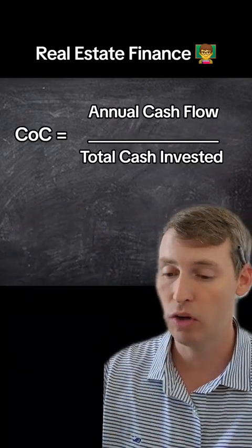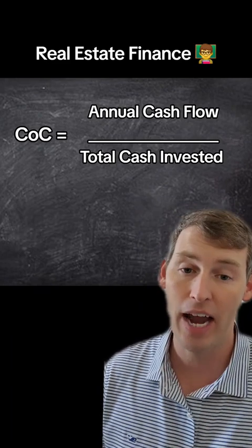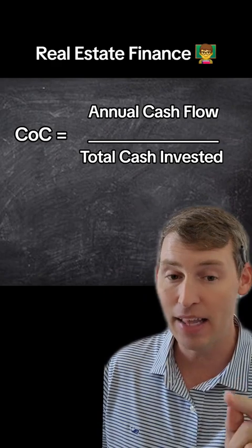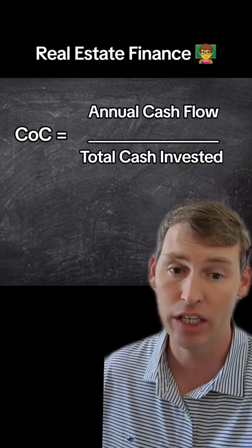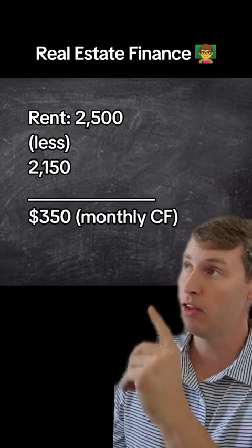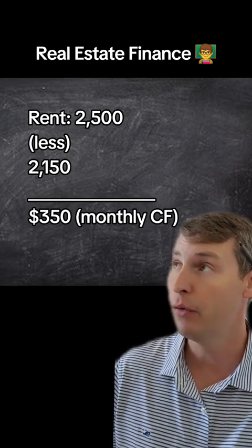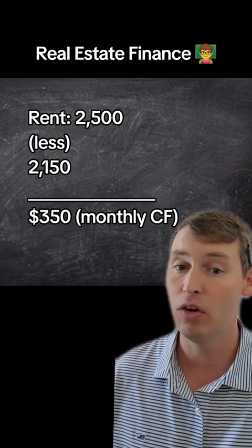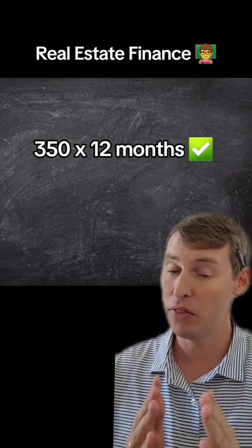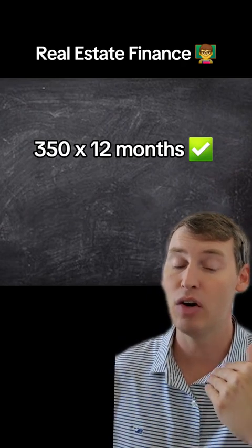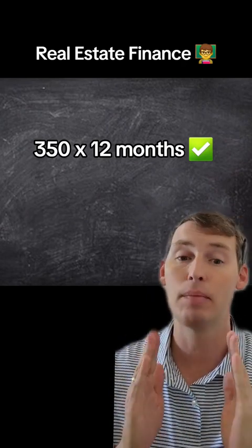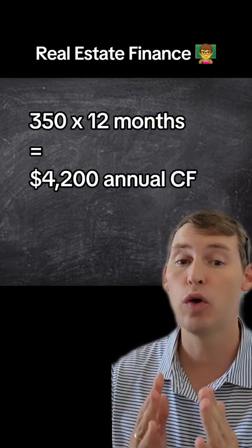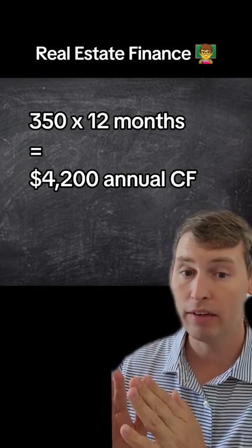The way the cash on cash formula works is we take our annual cashflow — which is pre-tax income — and divide that by the total cash we've invested in this project. Let's say this property rents for $2,500 a month. If our debt service and expenses are $2,150, that leaves us $350 a month in cashflow. We then look at that on an annualized basis: $350 times 12 months equals $4,200 a year in annualized cashflow.